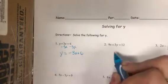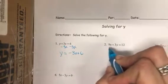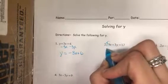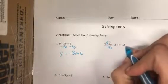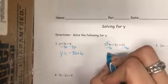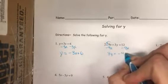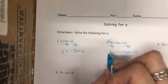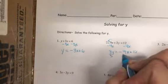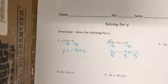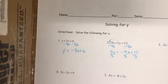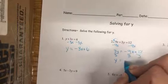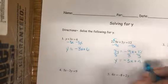Number two: if we want to solve this for y, we're going to get rid of this x — it's the only other thing sitting by it. We'll undo a positive 9x with a negative 9x. So we'll have 3y equals negative 9x plus 12, and we're not done yet because we still have the number in front of y. We'll undo multiplication with division across every single term, giving us y equals negative 3x plus 4.